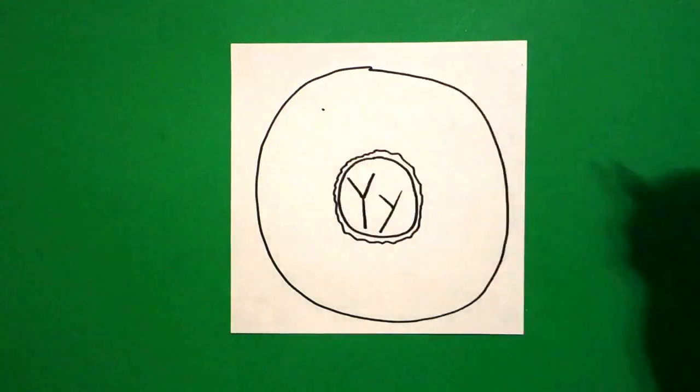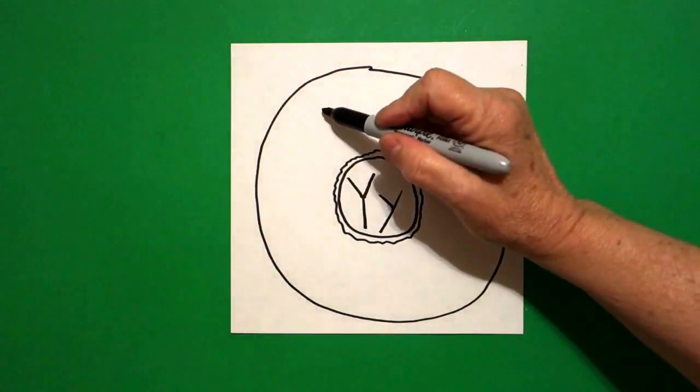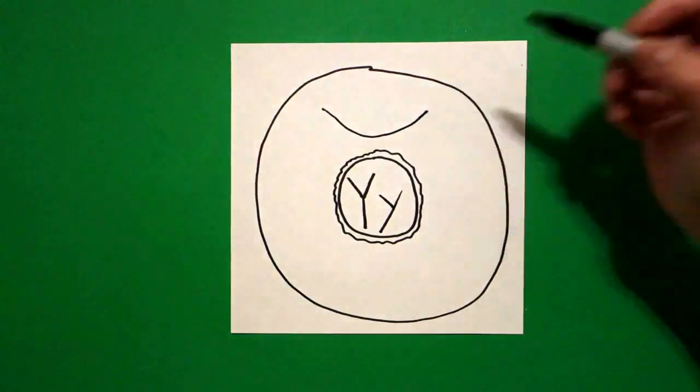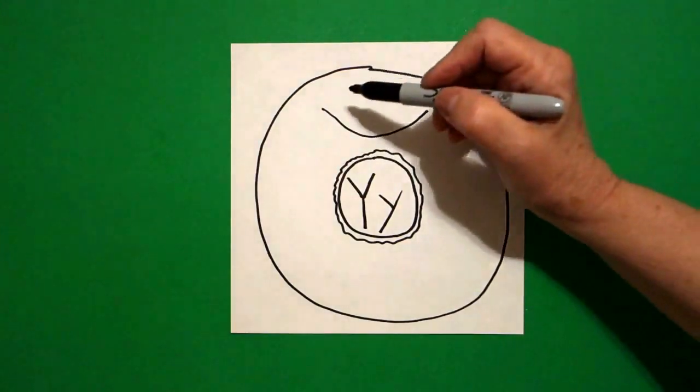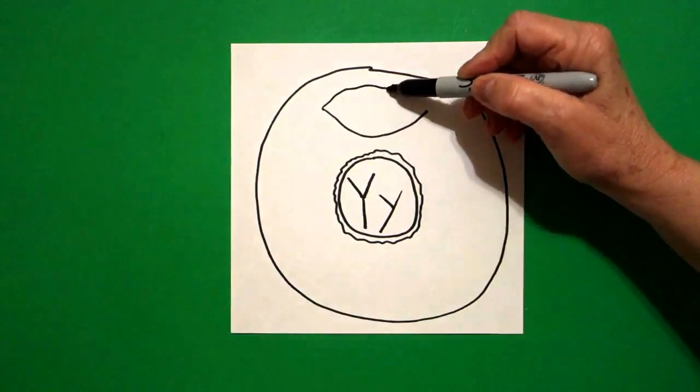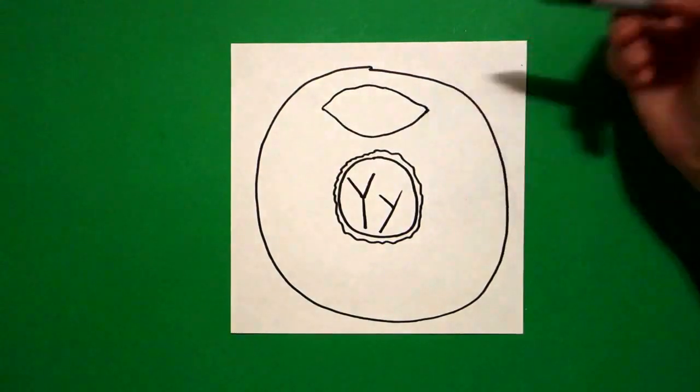Starting over here on the left-hand side, I put a dot. And I'm going to draw a curve line down, curve line up, leave it floating. Come back to the dot, curve line up, curve line down, connect.